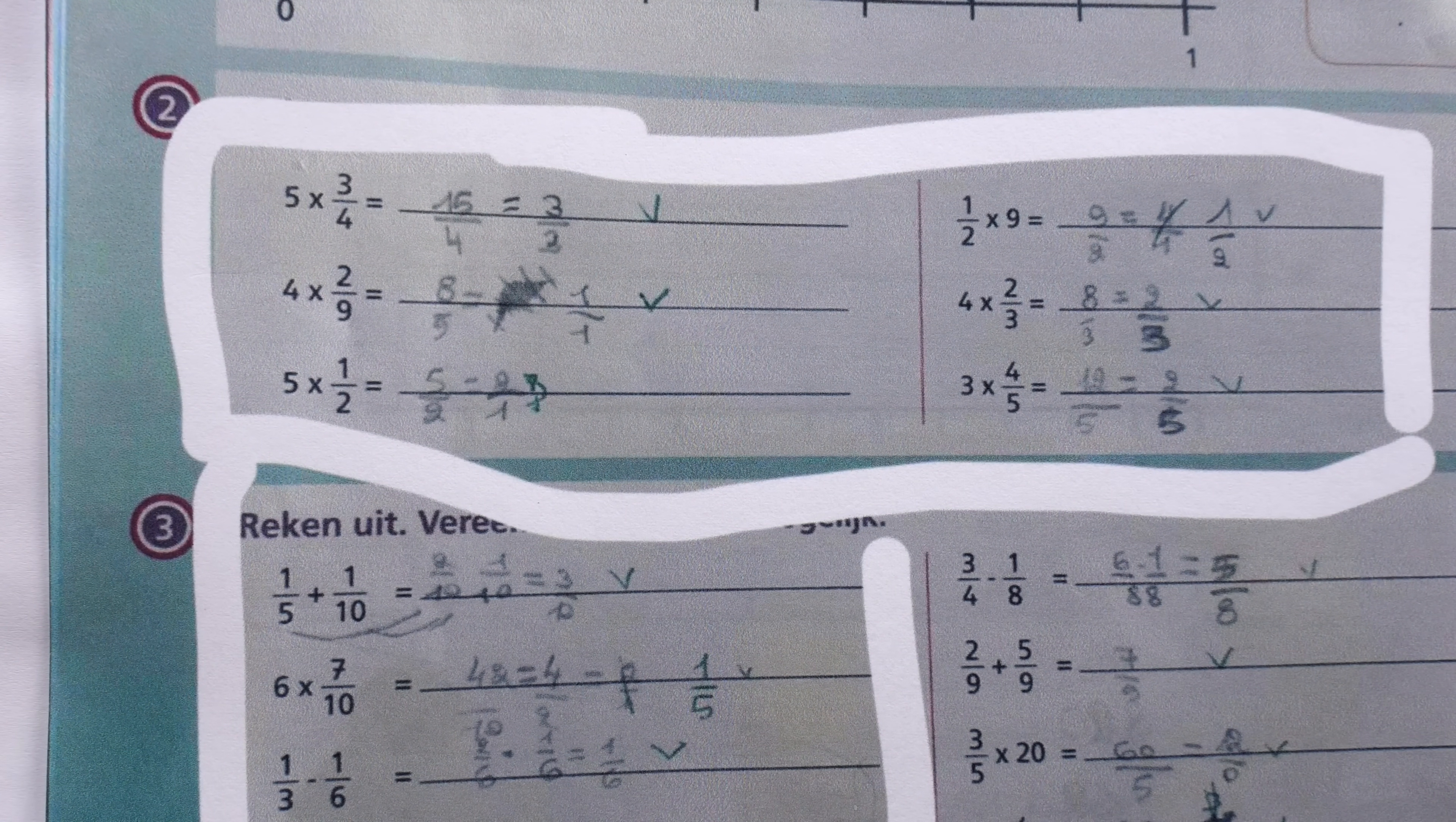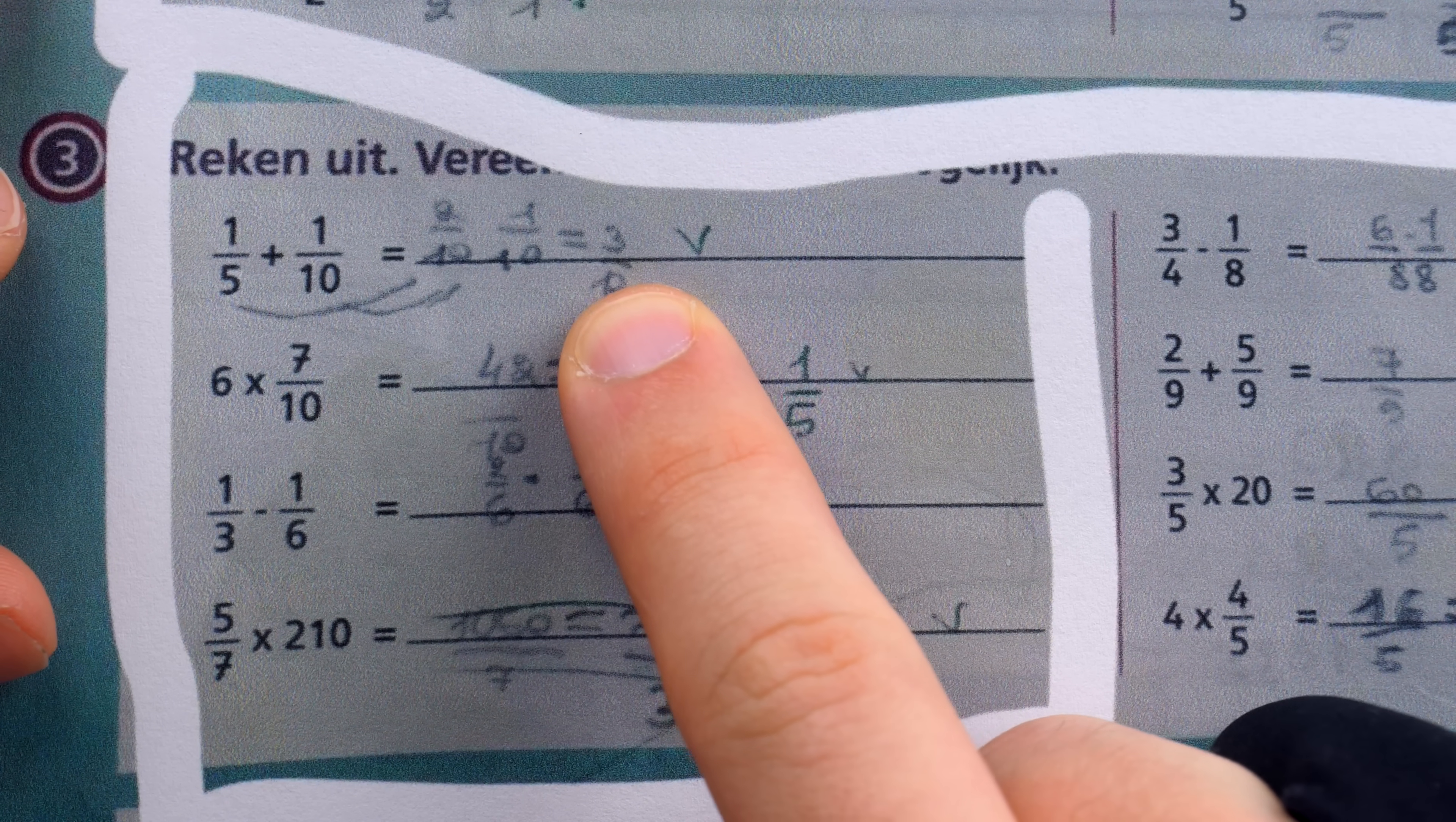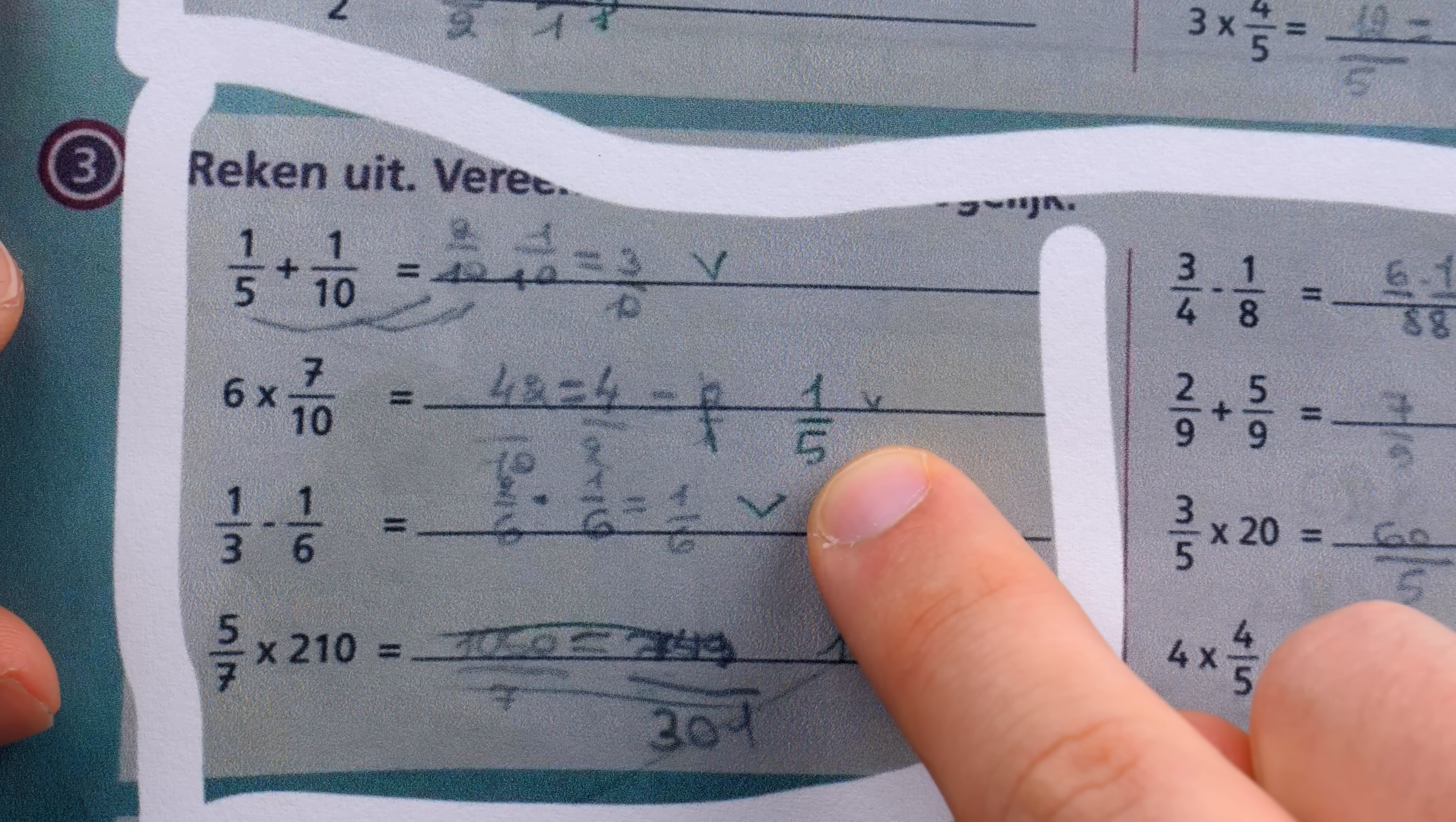When we go down to the next section, our working hypothesis that perhaps the teacher is just looking for fractional parts seems to be supported. This problem is done in a completely standard way, arriving at a correct answer of 3 tenths. Perhaps because the whole answer is just a fractional part, it has been marked correct. Then, we have 6 times 7 tenths, which is 42 tenths. The fractional part of that is 2 tenths, which is the same as the teacher's written answer here of 1 fifth.